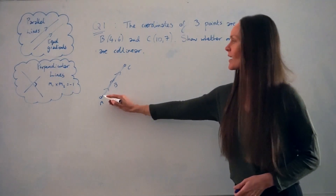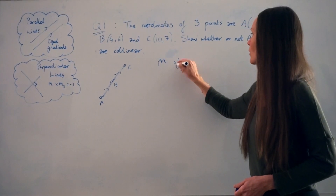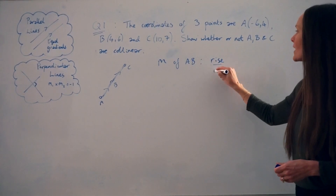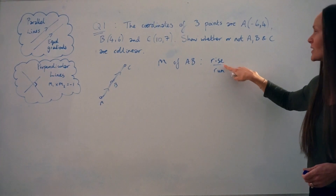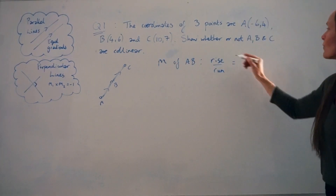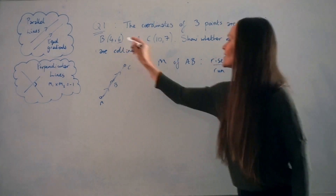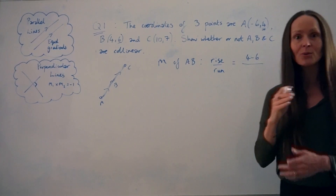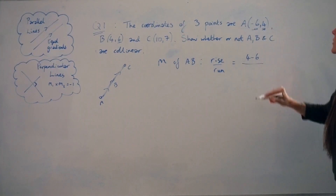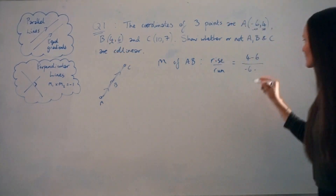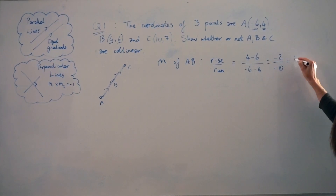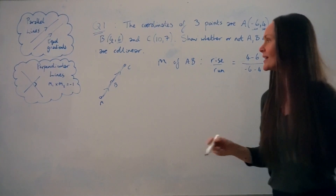I'm going to start by working out the gradient of line AB — M of AB. To work out the gradient, I'm going to use the method rise over run: find the difference between the Y coordinates and divide by the difference of the X coordinates. So the rise is the difference in Y: 4 take away 6. It doesn't matter which way round you subtract. Then divide by the run — the X difference — so −6 take away 4. That gives negative 2 over negative 10, which simplifies to 1 fifth. So the gradient of AB is 1/5.